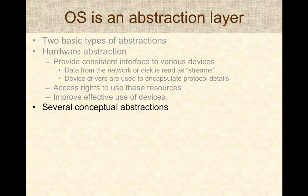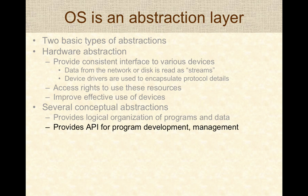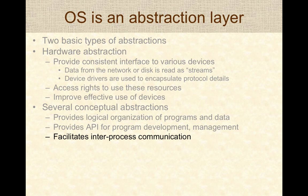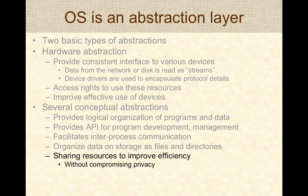The operating system also provides several conceptual abstractions. It provides logical organization of programs and data, both on disk and in memory, in the form of files. It provides an API for program development and management of different devices. It facilitates inter-process communication, maybe through pipes or even copy-paste operations between different programs. It organizes data on disks in the form of files, folders, and directories, making it easy to find and manage files. It enables resource sharing between different users and maintains privacy and security.